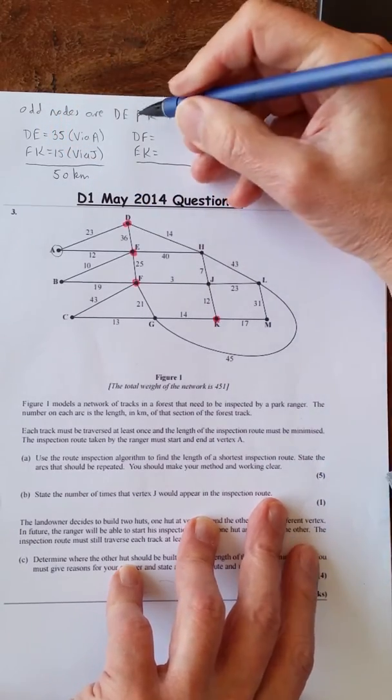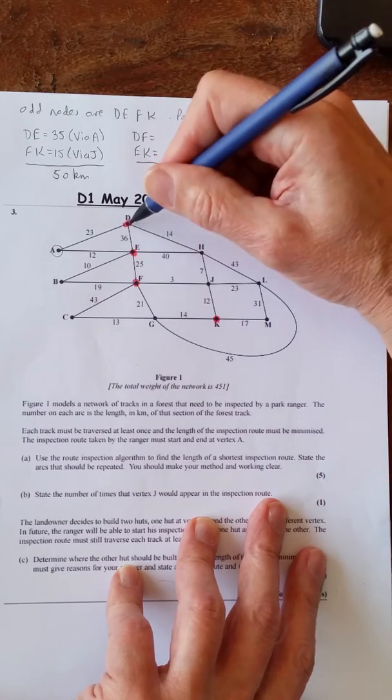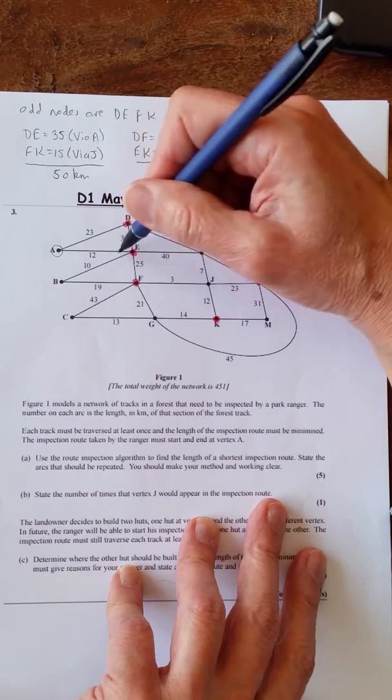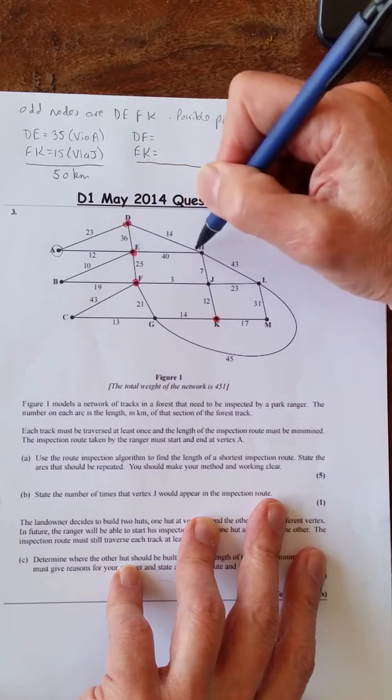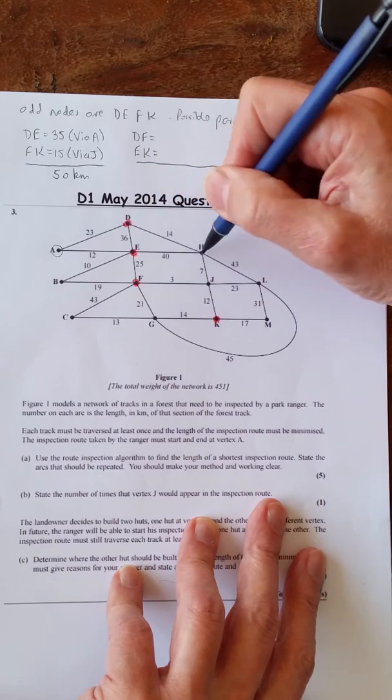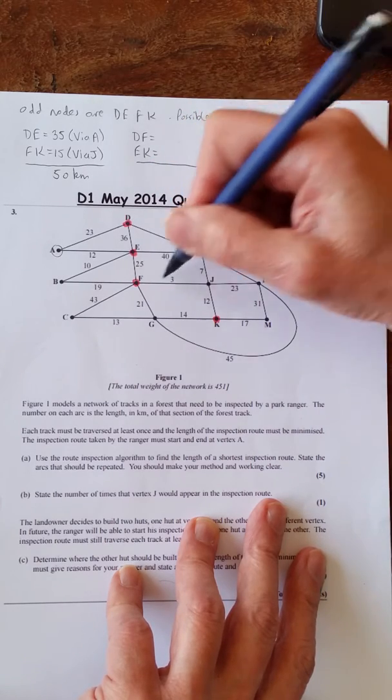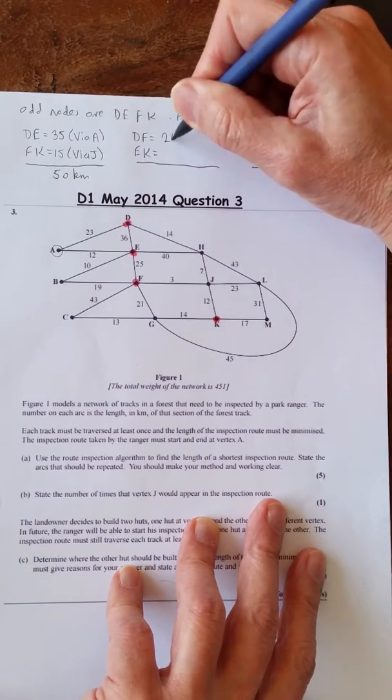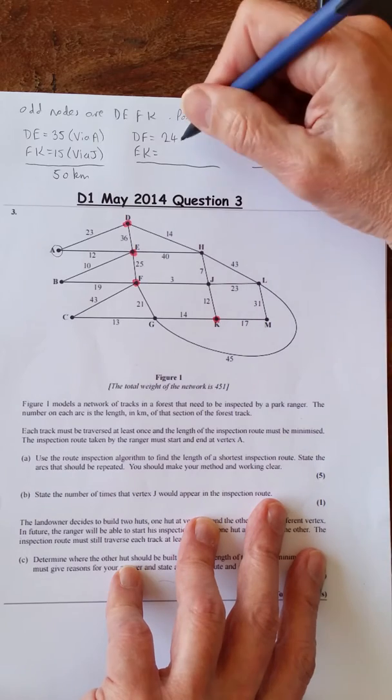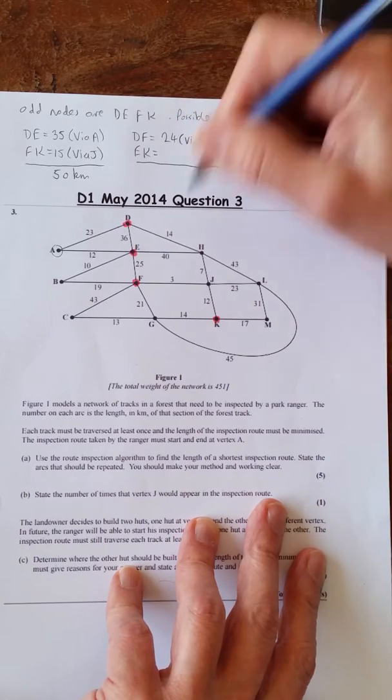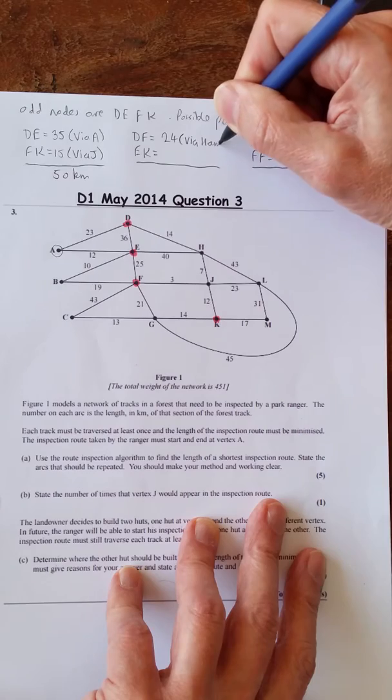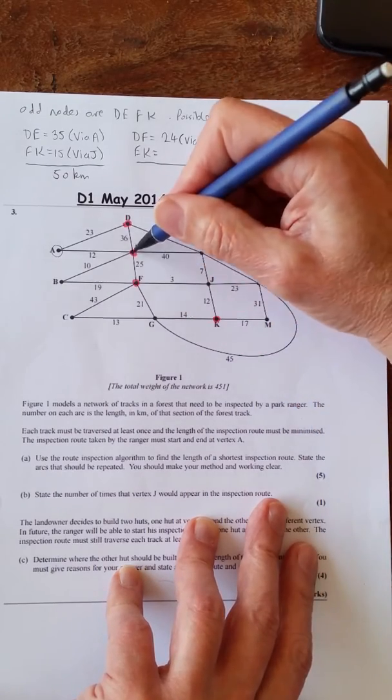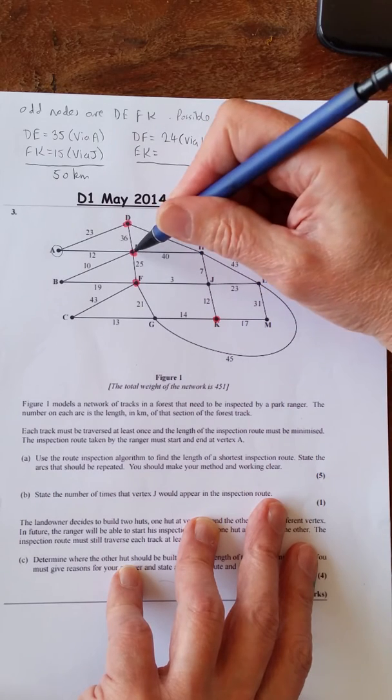Then let's look at the next one. D, F. D to F - 36 and 25, 23, 12, 10 and 19 - that's longer. That's shorter there. 14, 7 and 3. So we've got 14, 21, 24. So that's D, F is 24, and that is via H and J.